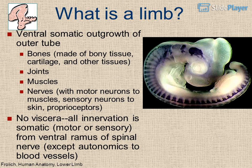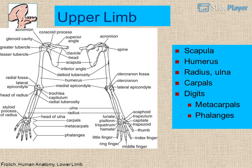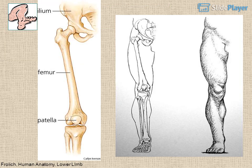All innervation is somatic motor or sensory from the ventral ramus of the spinal nerve, except autonomics to blood vessels. The lower limb bones are homologous to the upper limb: pelvis/femur/tibia/fibula/tarsals/metatarsals/phalanges correspond to scapula/humerus/radius/ulna/carpals/metacarpals/phalanges.